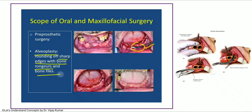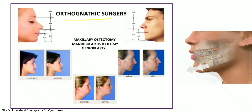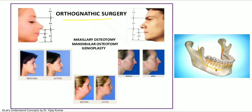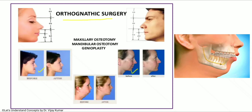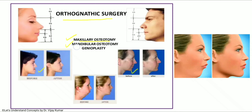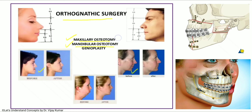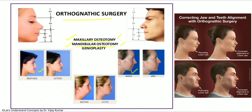Orthognathic surgery covers patients with maxillary prognathism, retrognathism, vertical maxillary excess, vertical maxillary deficiency, mandibular retrognathism, and prognathism. You learn about maxillary osteotomies — how to cut the maxilla and perform surgery — and mandibular osteotomies. A popular maxillary osteotomy is the LeFort I osteotomy. For the mandible, we have BSSO — bilateral sagittal split osteotomy. Genioplasty corrects chin position; before genioplasty you see mandibular retrognathism with receded chin, and after genioplasty a straight profile is achieved.